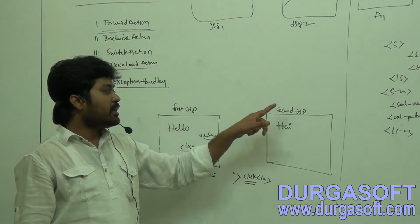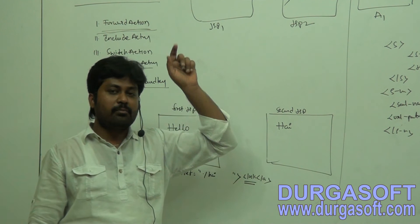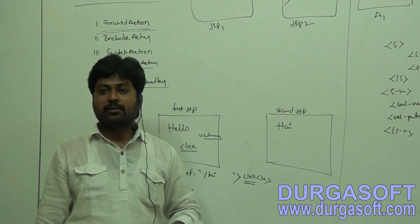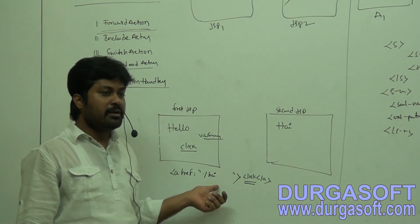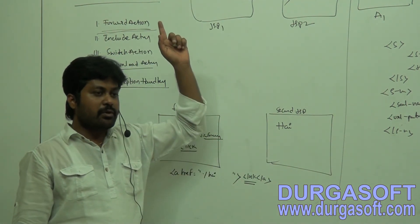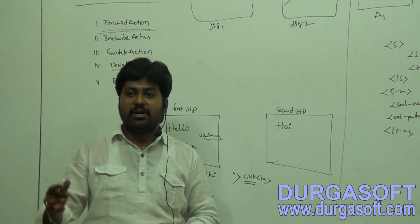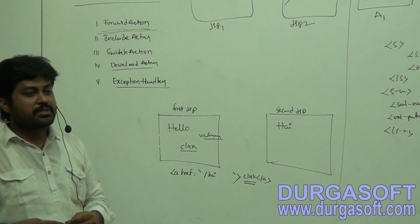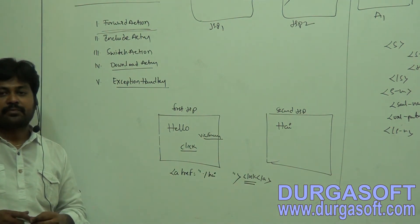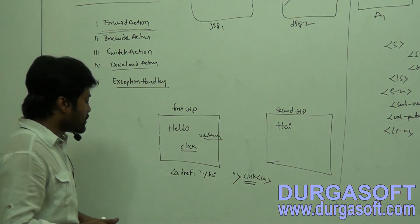But even with this approach, when you submit the request it still shows second.jsp in the browser URL bar. However, if you go through Struts, it will not show your page names — it shows only your action names on top of the URL, keeping actual page names hidden.